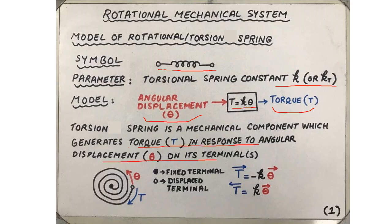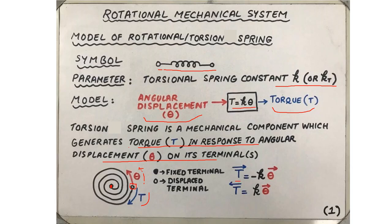The torsion spring is a mechanical component that generates torque in response to the angular displacement applied to its terminals. Consider an example of a coil-like torsion spring where one end is fixed and we apply displacement theta on the other end. If we apply a counterclockwise displacement theta, the spring exerts a clockwise torque T, so T and theta are in opposite directions. The relationship holds as T equals k*theta when T and theta are in opposite directions, or T equals minus k*theta when they are in the same direction.